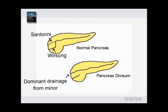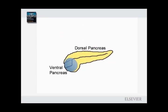The ventral pancreas, shaded in blue, has a hypoechoic texture with EUS. In a normal pancreas, the main pancreatic duct can be followed into the more echogenic dorsal gland.